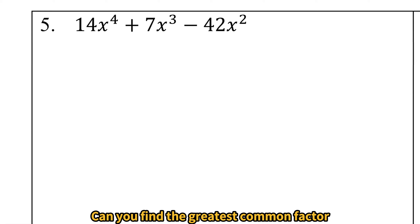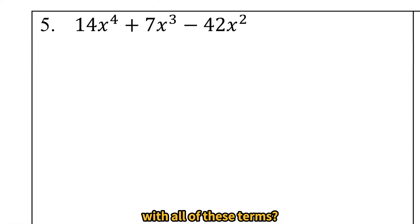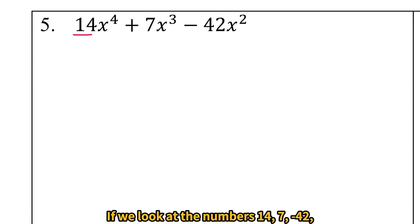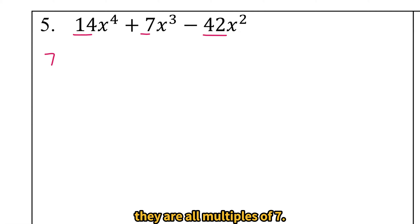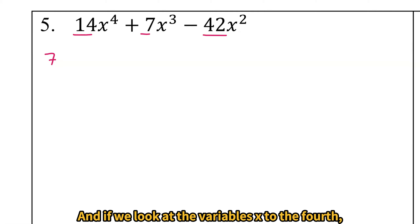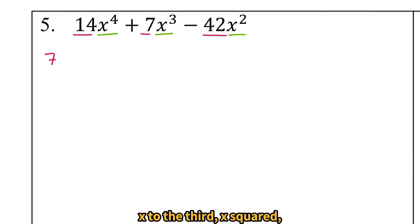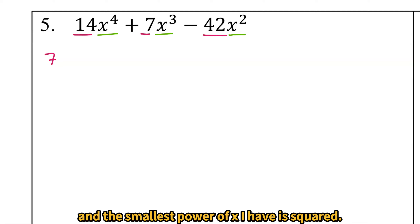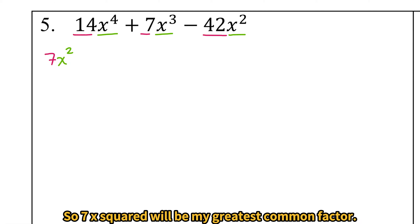Can you find the greatest common factor with all of these terms? If we look at the numbers 14, 7, negative 42, they are all multiples of 7. And if we look at the variables x to the fourth, x to the third, x squared — I have x's in all of my terms and the smallest power of x I have is squared. So 7x squared will be my greatest common factor.